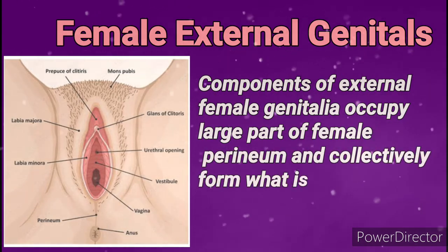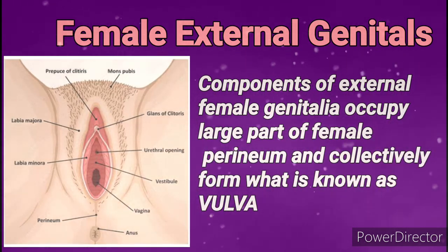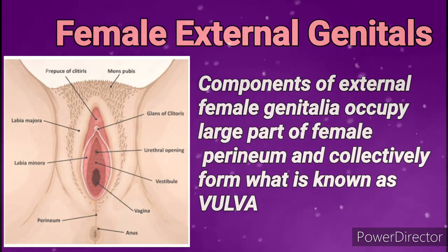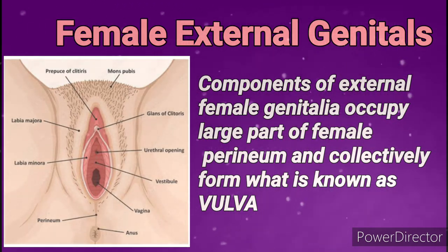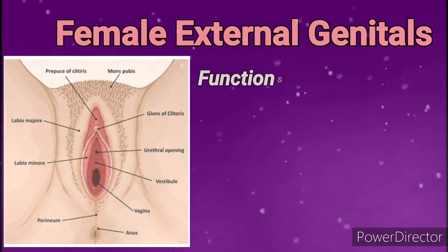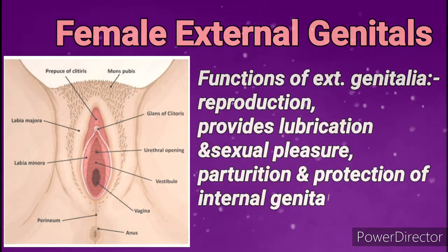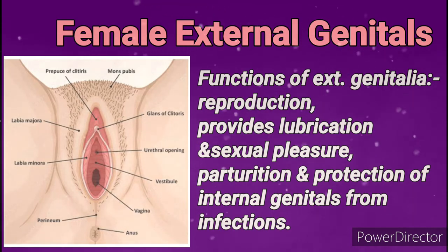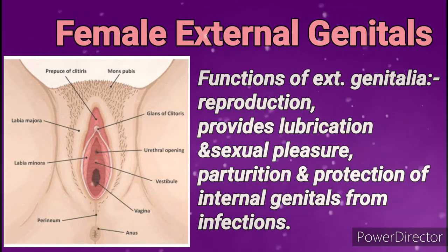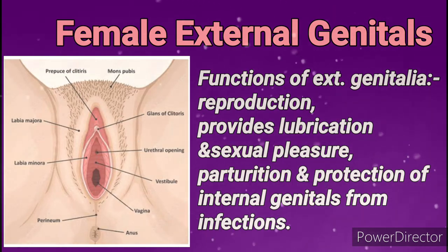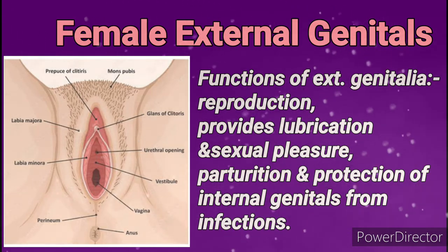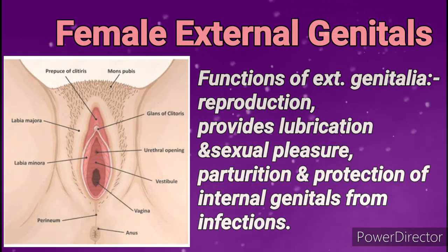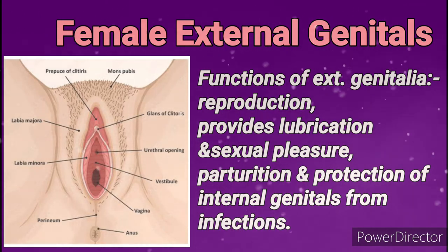Collectively, all these organs are known as the vulva, which occupies a large part of the female perineum. These organs help in reproduction, provide lubrication and sexual pleasure during sexual activities. Parturition and protection of internal sex organs from infection are the other functions of external sex organs.